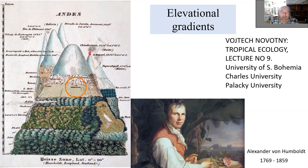Elevational gradients are very important for defining biodiversity patterns and species composition, but also excellent for study because you have conveniently a lot of different climatic zones within a short distance. That's not only logistically easy, but also removes dispersal limitation as one of the factors which can change species composition, since species typically can easily disperse up and down - it's only environment or other biotic factors which might be stopping them.